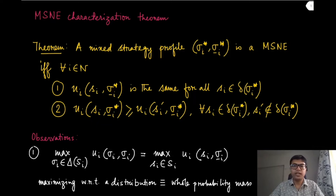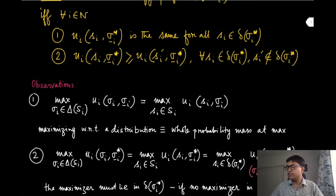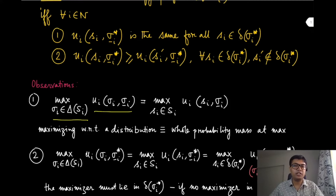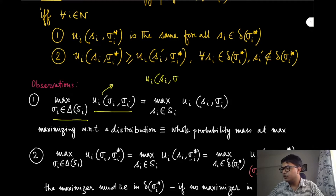To prove this theorem, we will need two observations about convex sets and their properties. The first observation concerns finding the maximum over all possible mixed strategies of player i. We can write the utility expression as a sum over all pure strategies sᵢ in Sᵢ, weighted by σᵢ(sᵢ), against the mixed strategy σ₋ᵢ of the other players.